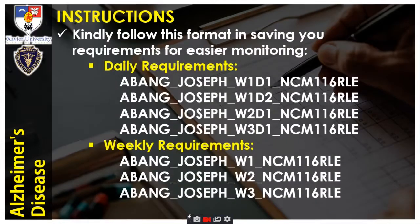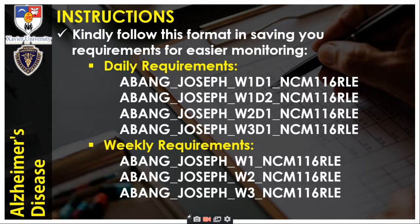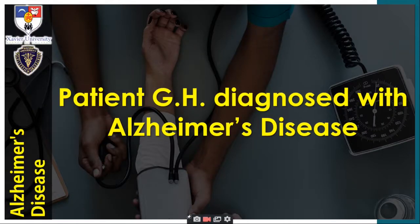Kindly follow this format in saving your requirements for easier monitoring — I have given you the examples already last week. For daily requirements: abang_joseph_w2day1_ncm116rle. For weekly requirements: abang_joseph_w2_ncm116rle.